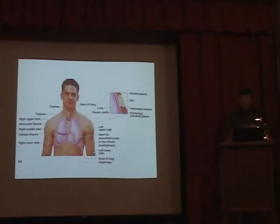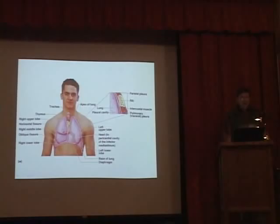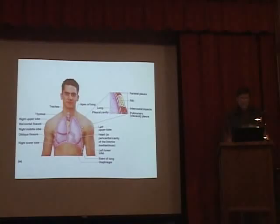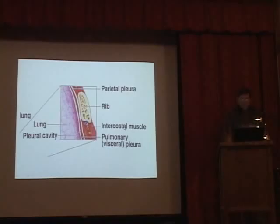Looking at the lungs from the front, they are asymmetrical: on the right side there are three lobes and on the left side two lobes. The trachea comes down and brings air in. If we take a section of lung right at the edge where it meets the rib cage and look more closely, we see the lung tissue, the rib, and the intercostal muscles between the ribs.